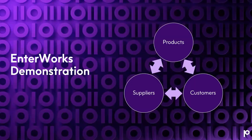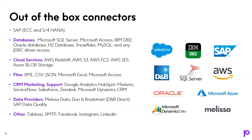Today's demonstration is going to focus on multi-domain MDM. We're going to start by talking about customer data, and then I'm going to reference product and supplier data and show how in one system it's all tied together. From one screen, you can see the relationship between a customer and its products, product and its suppliers, suppliers and its products, et cetera. We'll go ahead and dive in in just one more slide.